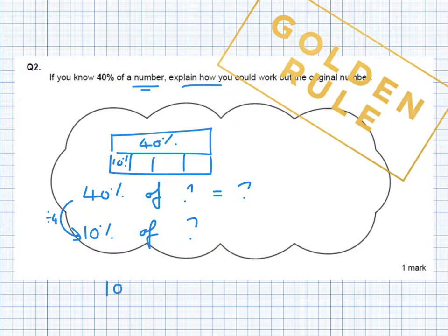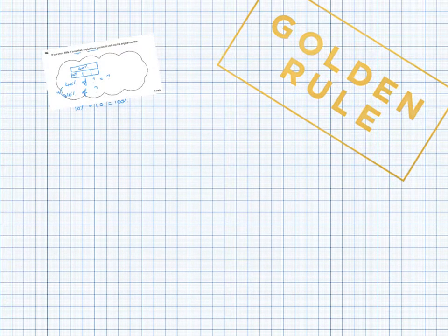Now once I've got 10% of my number, I think, well how many 10% do I need to make 100% of the number? So 10% times by 10 is 100%. So to find the original number from 40%, I would divide the number by 4 to get 10%. Once I've got 10%, I would take whatever 10% is and times it by 10 to make 100%.